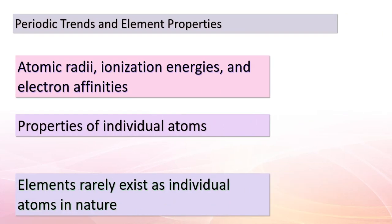In our exploration of the fascinating world of chemistry, we now turn our attention to periodic trends and properties of elements. While we often study atomic radii, ionization energies, and electron affinities, we must remember that most elements don't naturally exist as isolated atoms. This prompts us to look beyond individual atoms and analyze the properties of larger collections of atoms, giving us a broader understanding of element properties and the intricacies of periodic trends.